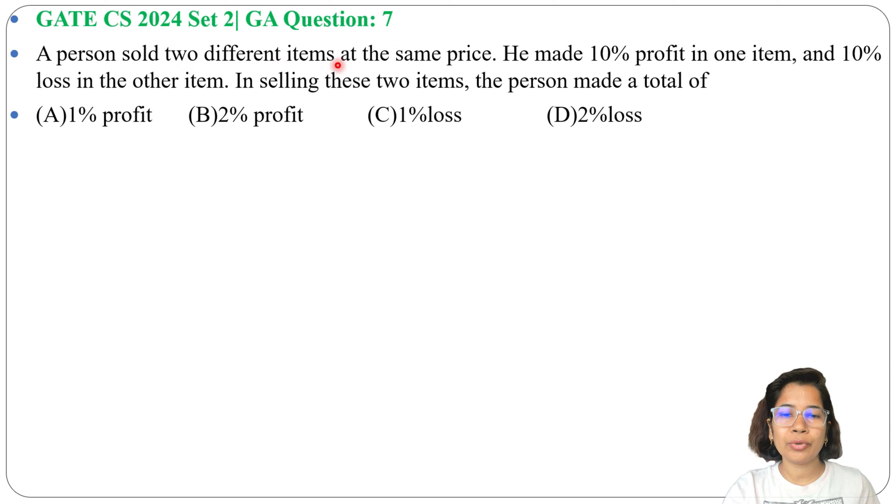A person sold two different items at the same price. He made 10% profit in one item and 10% loss in the other item. In selling these two items, the person made a total of... Four options are given.